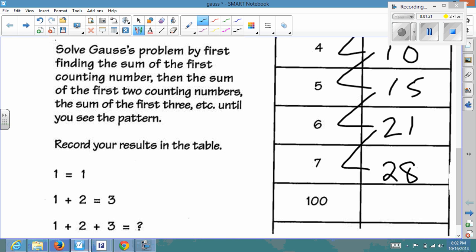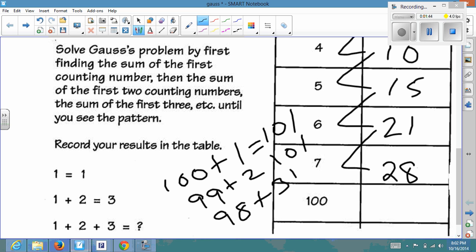But how would we know what it was when we got up to 100? So what Gauss noticed was if you took 100 and added 1 to it, you'd get 101. And then if you took 99 and added 2 to it, you'd get 101. And then 98 plus 3, and you'd get 101. So he noticed that he kept getting 101.